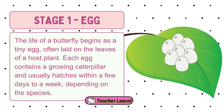Stage 1 – The Egg. The life of a butterfly begins as a tiny egg, often laid on the leaves of a host plant. Each egg contains a growing caterpillar and usually hatches within a few days to a week, depending on the species.